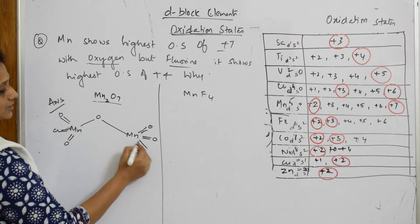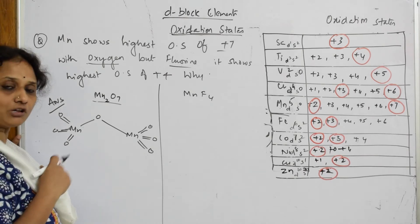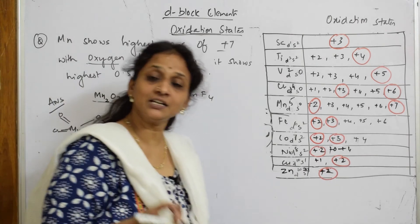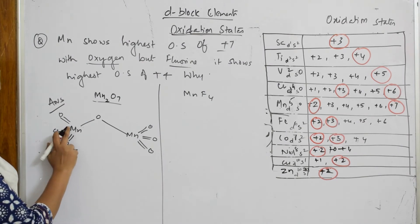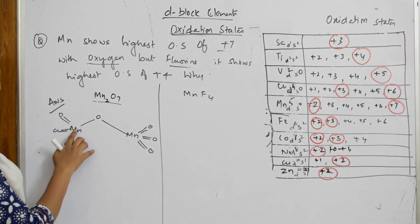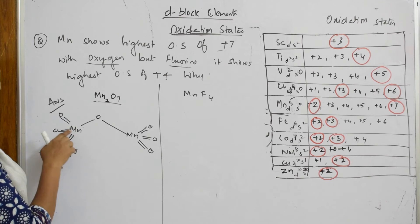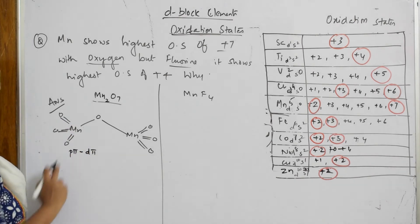What are you observing here? What type of bonding is observed? Oxygen is going to involve the p orbital. It doesn't have d orbital. Oxygen involves p orbital and forms p-pi bonding. Manganese has d orbital, so it forms d-pi bonding.